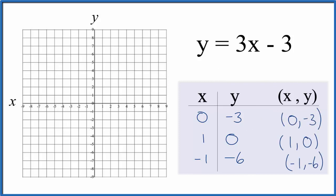Let's see, we have x is 0 and y is -3, so we go down 3. We have x is 1 and y is 0, so we'll just leave that right there. Then we have -1 for x and -6 for y, so at -1 on x, go down 6.